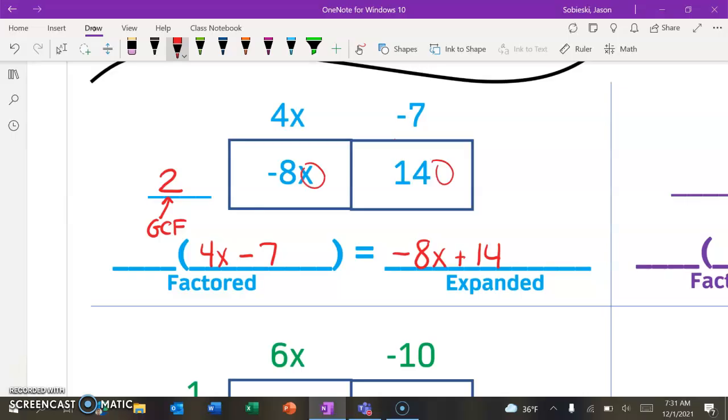Well, this term has an x, this one does not, so we cannot factor out an x from those terms. However, the only other thing that we would need to check, and it's actually a nice hint, is they wanted us to factor this, which we're doing, by pulling out the GCF. But they already gave us part of the factored form, so let's use that.